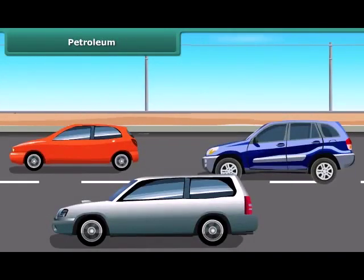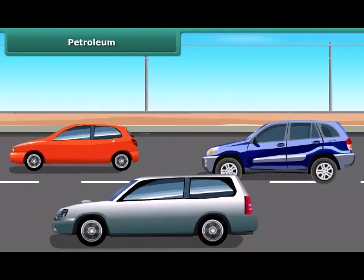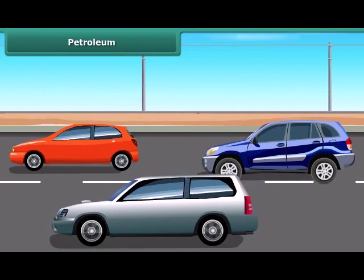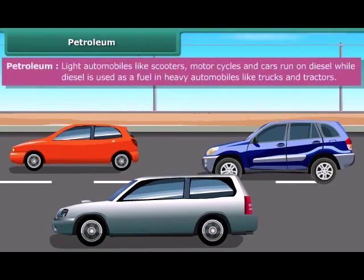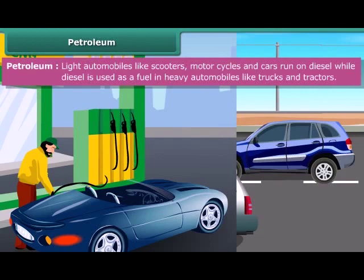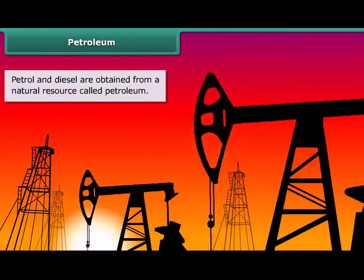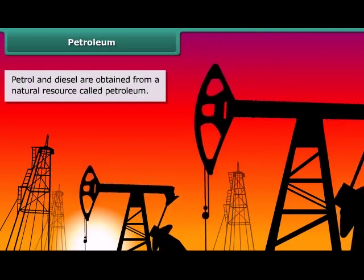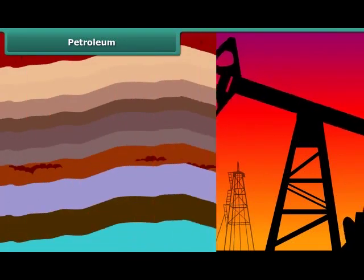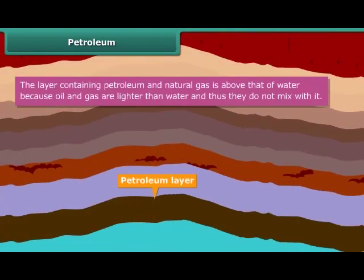Friends, most luxury cars and vehicles run on either petrol, diesel, or compressed natural gas, also known as CNG. Petrol and diesel are obtained from a natural resource called petroleum. Petroleum and natural gas deposits exist as a layer above the water layer underground.